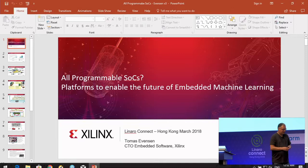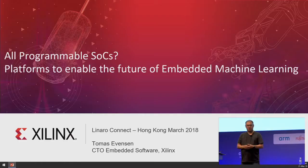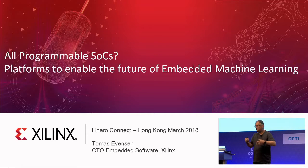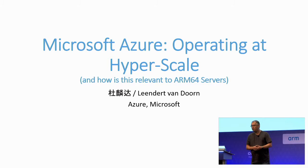I want to talk a little bit about how we run Azure. Azure is the second largest cloud in the world. We're doing quite a lot of things with ARM, and I want to talk about how that is relevant to ARM, what we're doing, what kind of things we're building — the hardware platform, software — but also talk a little bit about the challenges.